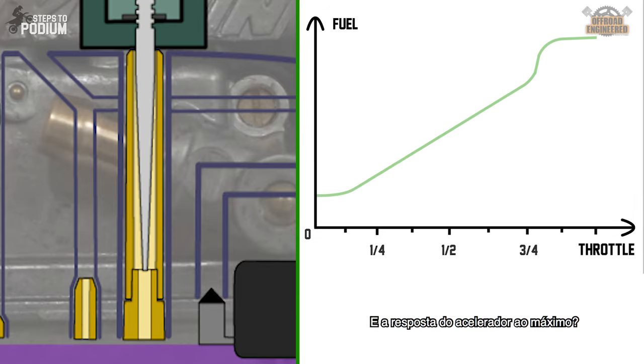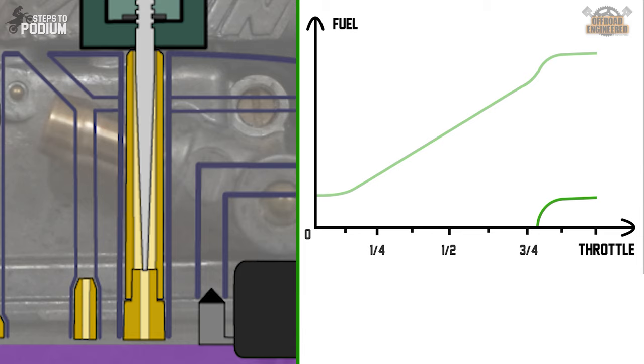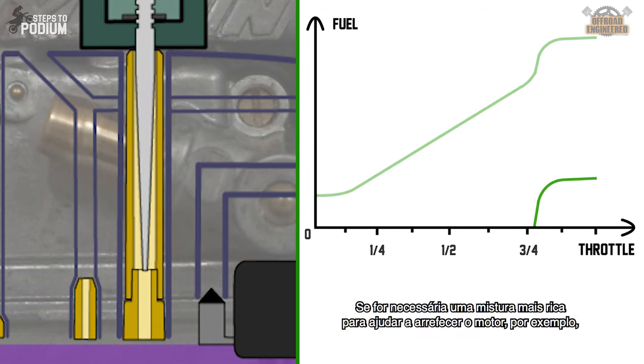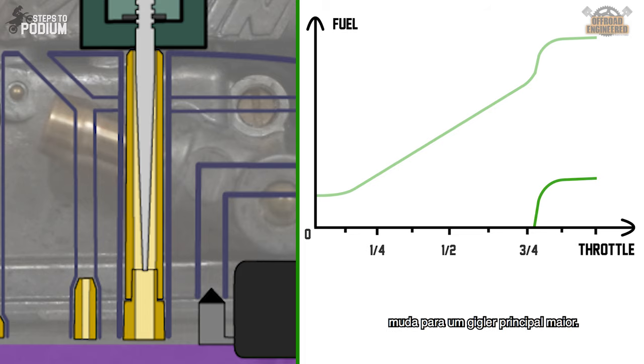And what about full throttle? If you need a leaner mixture on full throttle to avoid fouled plugs effects, change to a smaller main jet. If you need a richer mixture to have a cooler engine at full throttle for example, change to a bigger main jet.